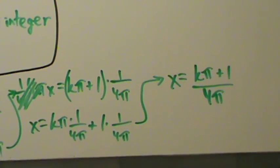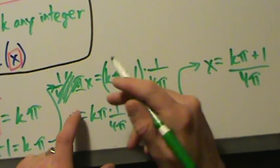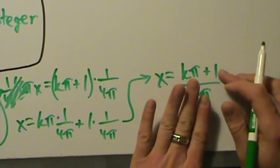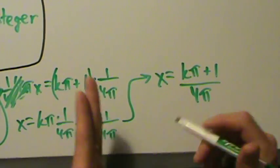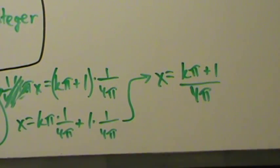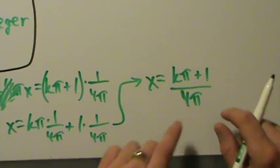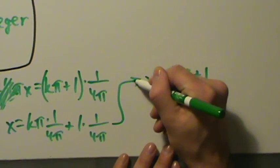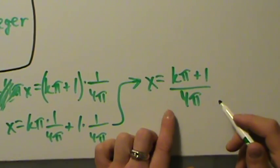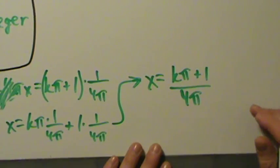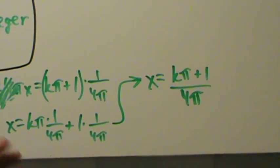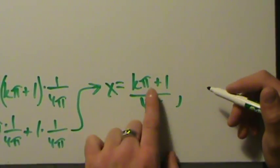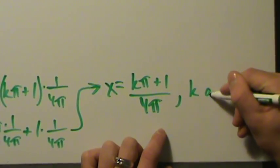We could have canceled the π's to get k/4 + 1/(4π), but keeping a common denominator is tidier. So the general equation is x = (kπ + 1)/(4π), where k is any integer. That's the general equation for the vertical asymptotes.